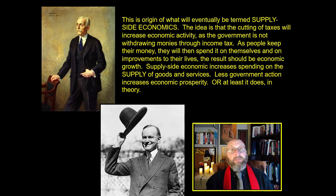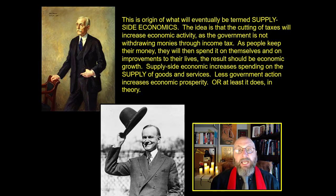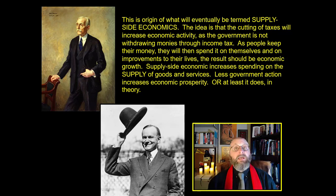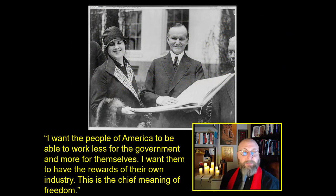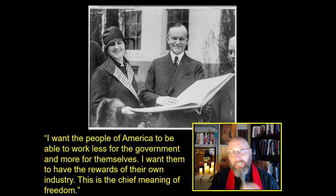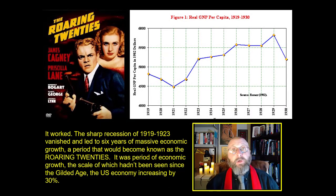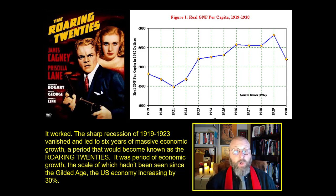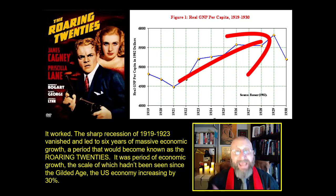Supply-side economics is the idea that cutting taxes increases economic activity, as the government is not pulling money out of the economy through income tax. As people get to keep their own money, they spend it on themselves, their homes, and improvements in their lives, resulting in economic growth. Coolidge said: 'I want the people of America to work less for the government and more for themselves. I want them to have the rewards of their own industry. This is the chief meaning of freedom.' The supply-side economics worked — the sharp recession of 1919 to 1923 vanished almost overnight, leading to six years of massive economic growth known as the Roaring Twenties.